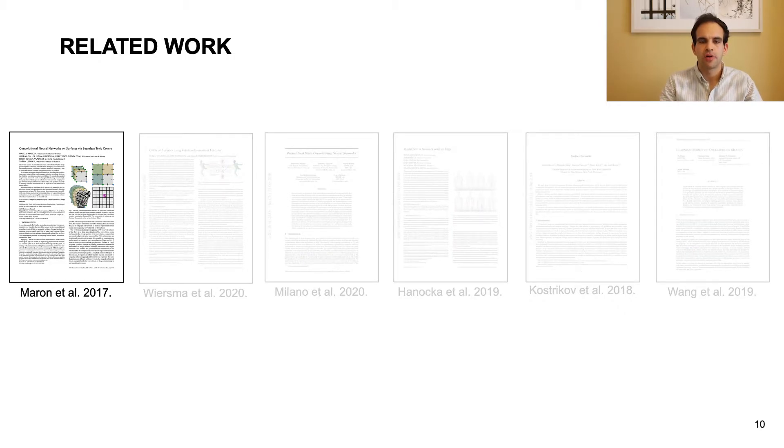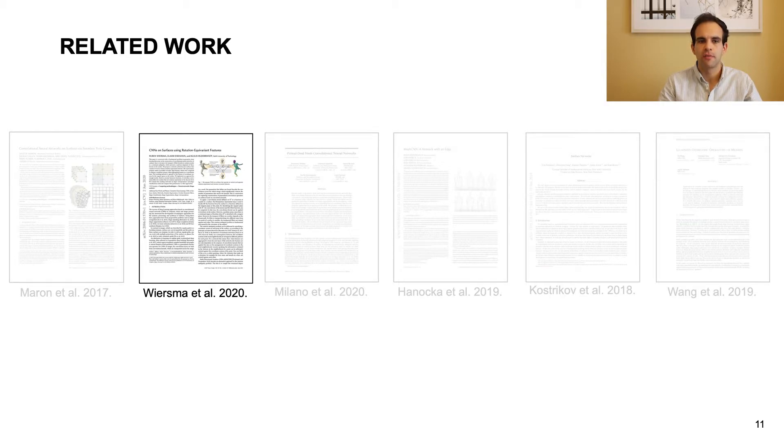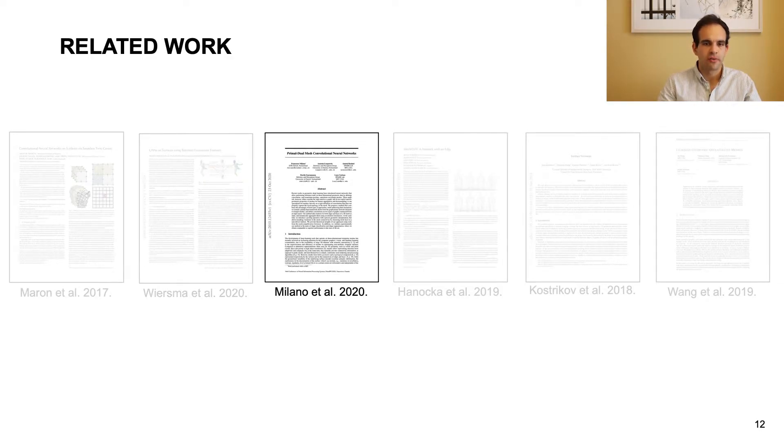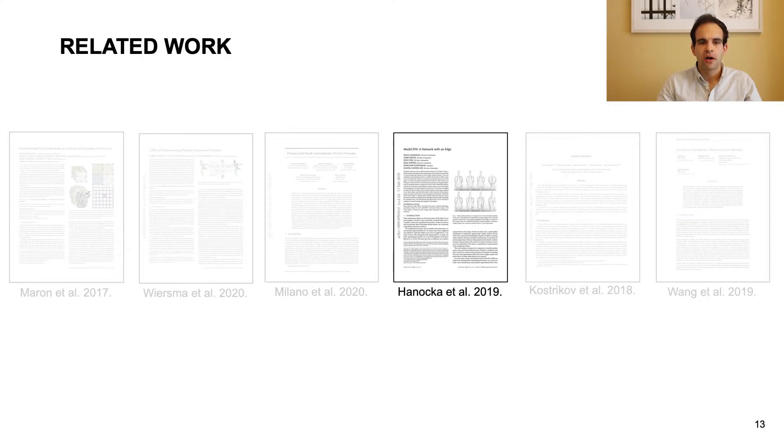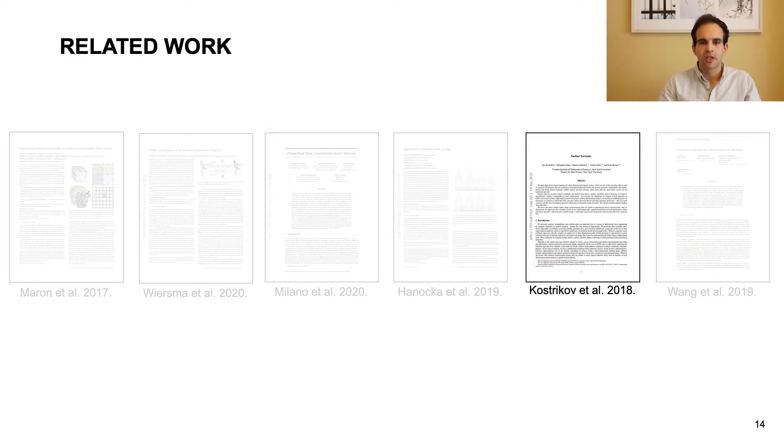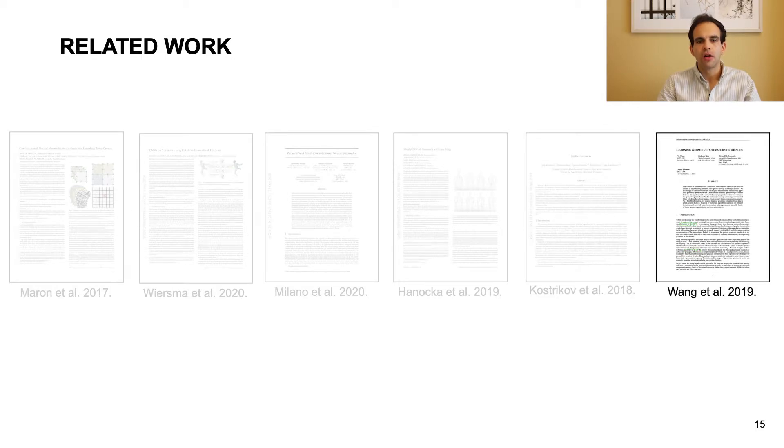Some approaches parametrize meshes into an image domain, using, for example, seamless toric covers, so that standard CNN architectures can be applied. Others propose improved ways to apply learned convolution kernels on surfaces. There, global data is aggregated through multiple layers, as is typical in graph neural networks. PDMeshNet augments the graph of mesh edges with the graph of dual edges, capturing triangle adjacency, employing pooling techniques inspired by mesh simplification. The MeshCNN architecture learns edge features and performs pooling based on edge collapse operations. Surface networks use fixed discrete Laplacian and Dirac operators as edge weights in GNNs. Wang et al. learn a parametrized operator, but do not differentiate through sparse linear algebra computations.